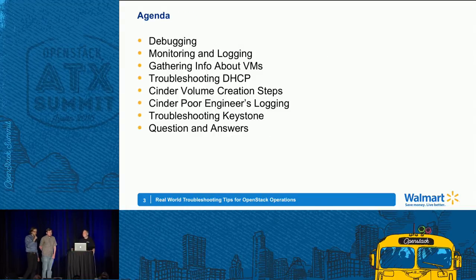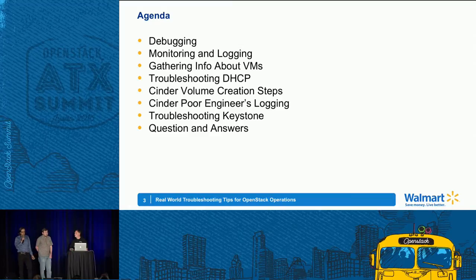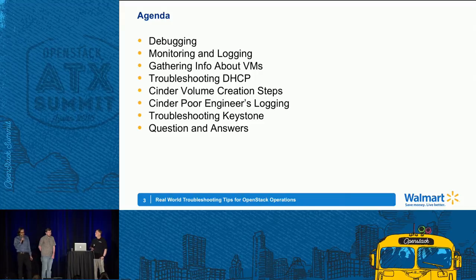We're going to talk about some general debugging tips and tricks. We'll talk about monitoring and logging, how to gather information about your VMs, troubleshooting DHCP specifically. We'll talk about how Cinder creates a volume. If you don't have centralized logging, how can you look at your logs in some other ways. We'll do a little bit of troubleshooting Keystone, and we'll have some room for questions and answers.